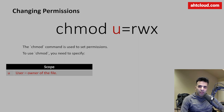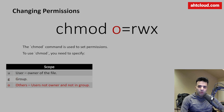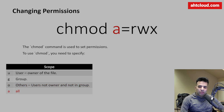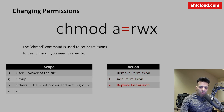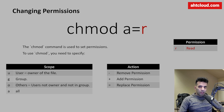The 'g' scope represents the group. The 'o' scope represents others — all users who are not the owner and not in the group. The 'a' scope represents all, applying the change to users, groups, and others. For the action, a minus sign removes permissions, a plus sign adds permissions, and an equals sign replaces whatever permission is currently set.